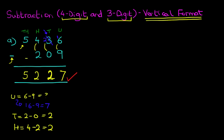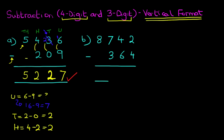Okay, so that's our first example done. We're now going to move on to our second example. This time we have 8,742 minus 364. Let's label the columns again. Okay, we're ready to do the subtraction.